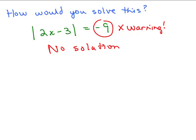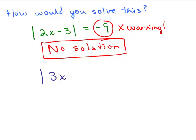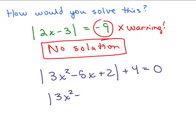That's the answer — you don't have to do anything. If you didn't notice this and you wrote 2x minus 3 equals 9 or 2x minus 3 equals negative 9 and went to solve, when you checked it, you would find it never gives a solution. The quick way is to stop right there. What about if you had the absolute value of 3x squared minus 5x plus 2, plus 4 equals 0? Notice the absolute value is not isolated, so first subtract 4 from both sides. You get the absolute value equaling a negative number — again, no solution.